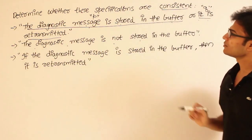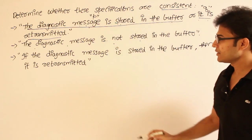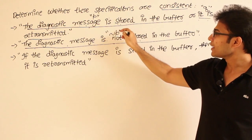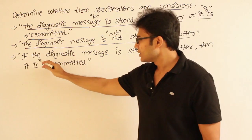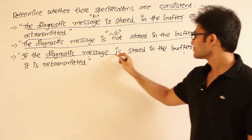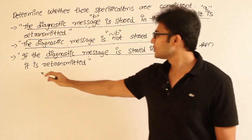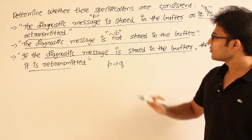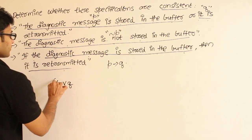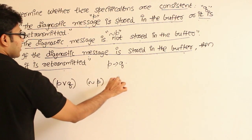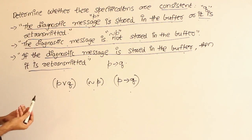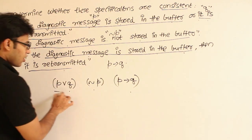Now if you see the next statement: 'the diagnostic message is not stored in the buffer.' Looking at P and this statement, you can understand that this particular statement is negation P, because it is just the negation of statement P. The next one: 'if the diagnostic message is stored in the buffer then it is retransmitted' — this is nothing but P implies Q. Therefore we have three statements: P or Q, negation P, and P implies Q. We have to find some assignment of truth values to P and Q such that all three are true simultaneously.